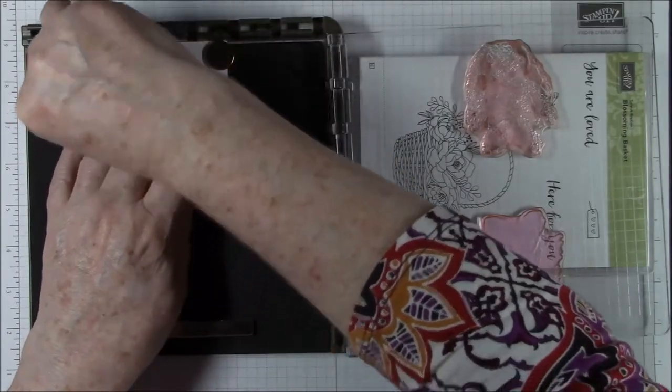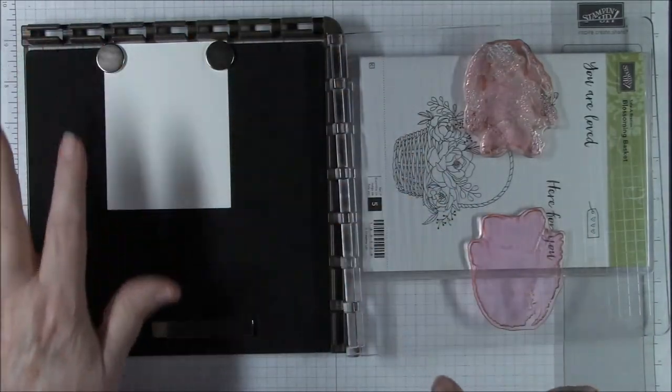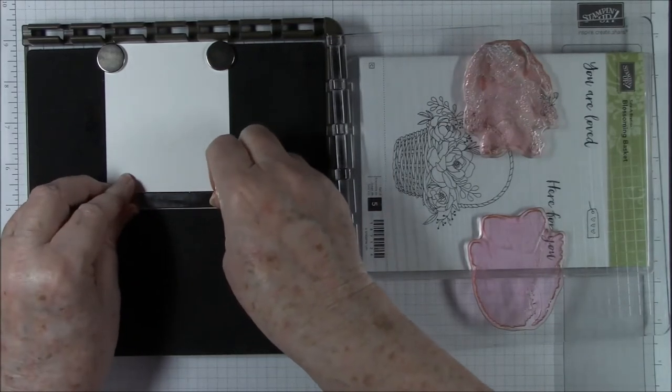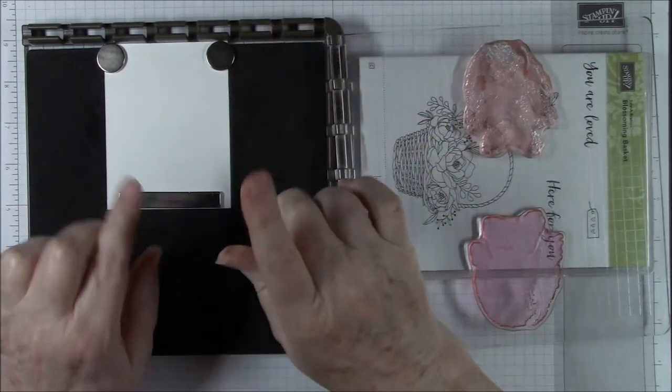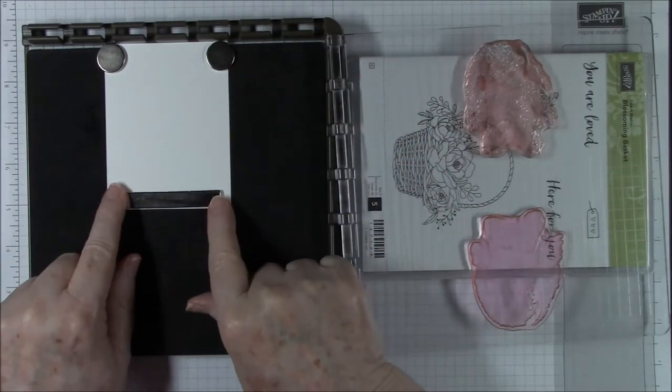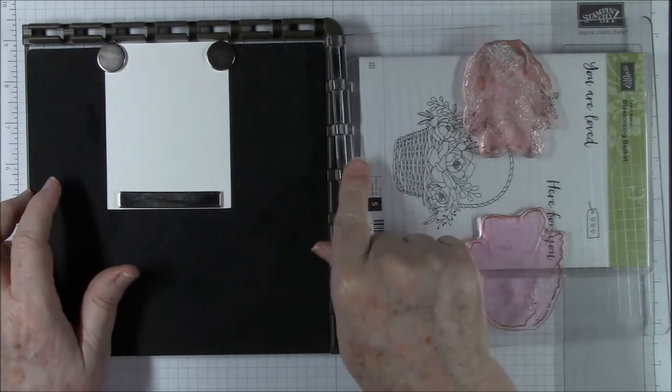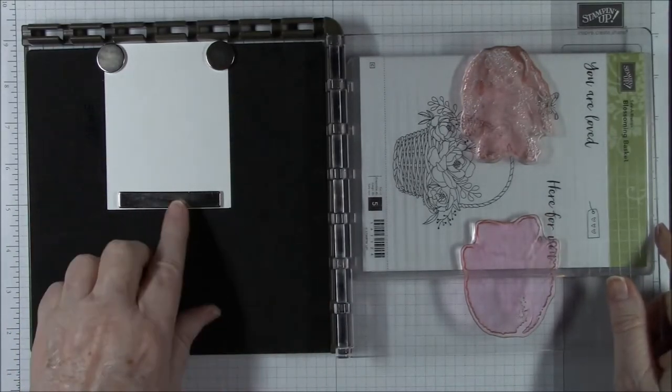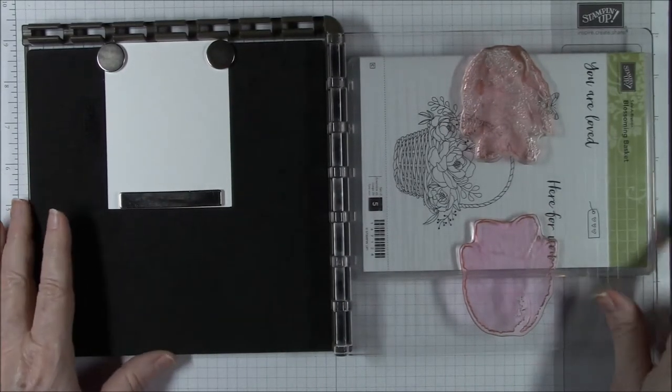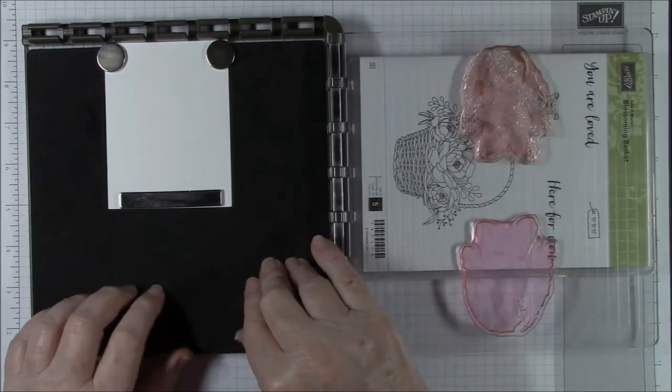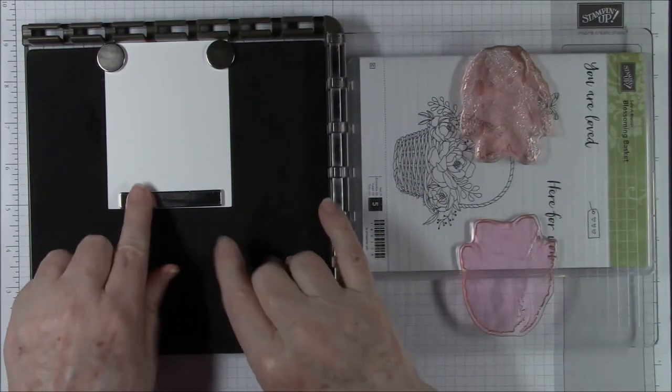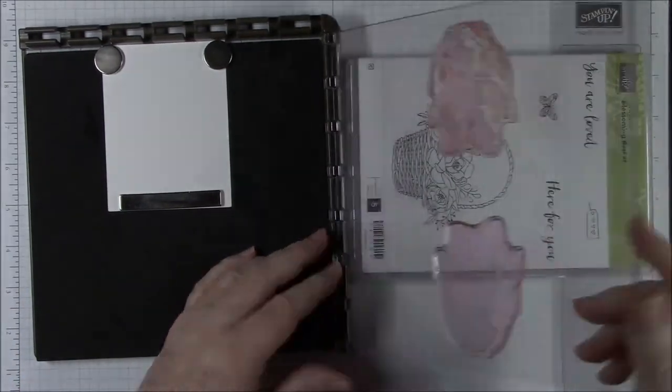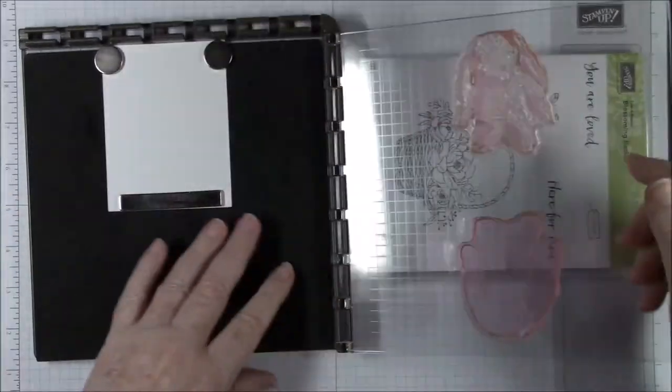And then I'm going to put my little magnets there. And then I have one of the big magnets that comes with the Stamparatus. These smaller magnets, I'm using those because they're not as thick as this bar that comes with the Stamparatus. And I've found that when you're working close to the edge, if you're using the big bar or even when you're using this pad with photopolymer, this bar is so thick that if your photopolymer stamps aren't very thick, you basically have to push really hard to get a good image.